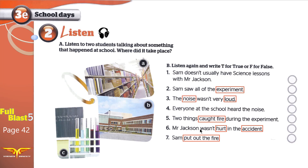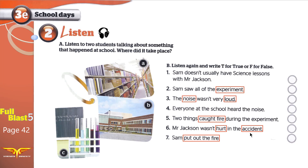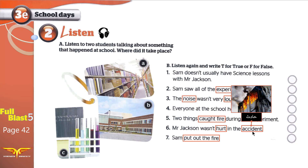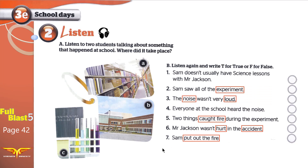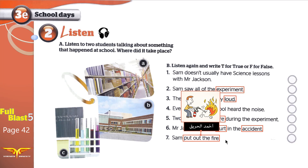Six. Mr. Jackson wasn't hurt — he wasn't injured in the accident. An accident is something bad that happens unexpectedly; nobody planned for it. Seven. Sam put out the fire — was it Sam or someone else who stopped the fire?